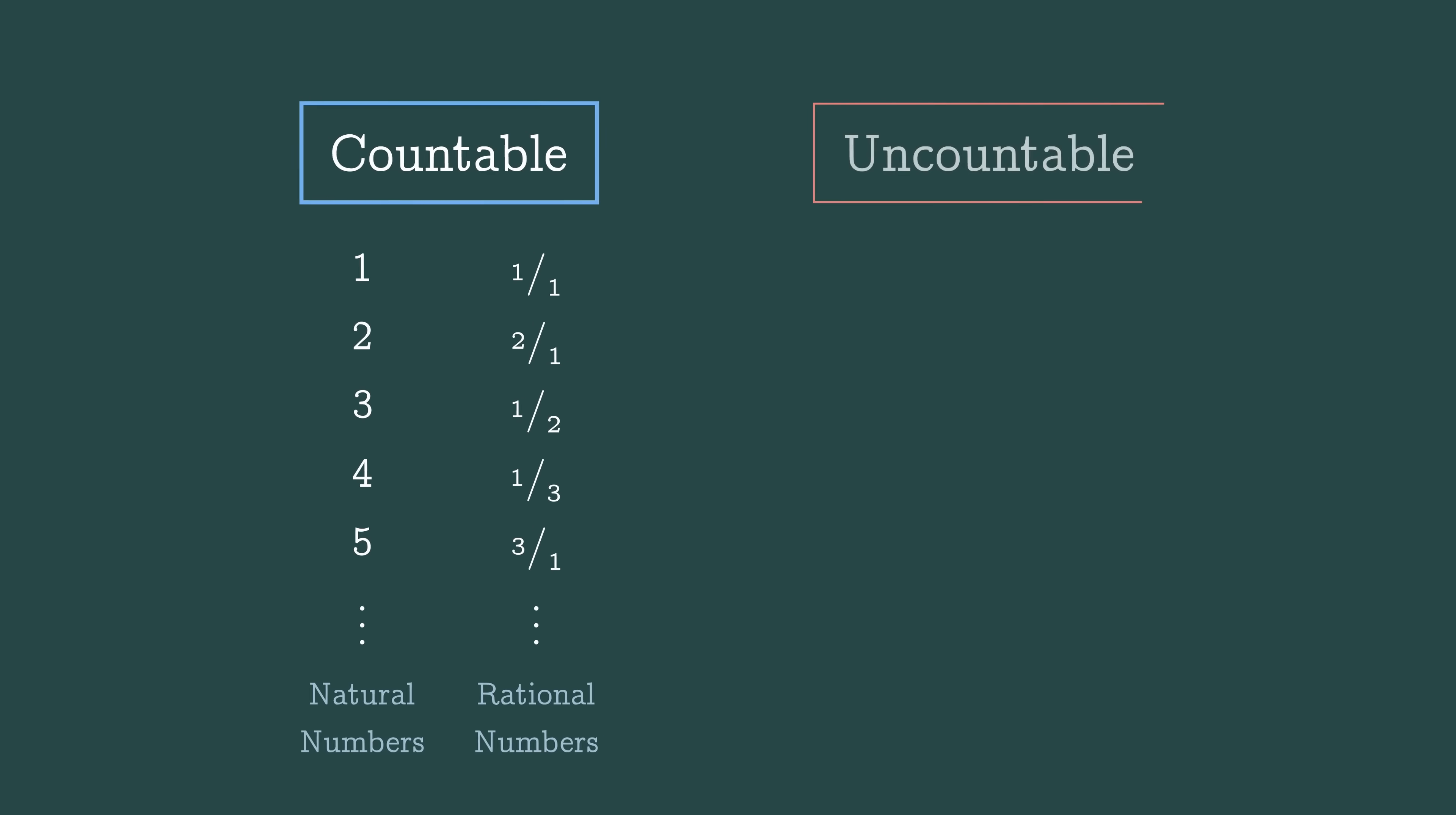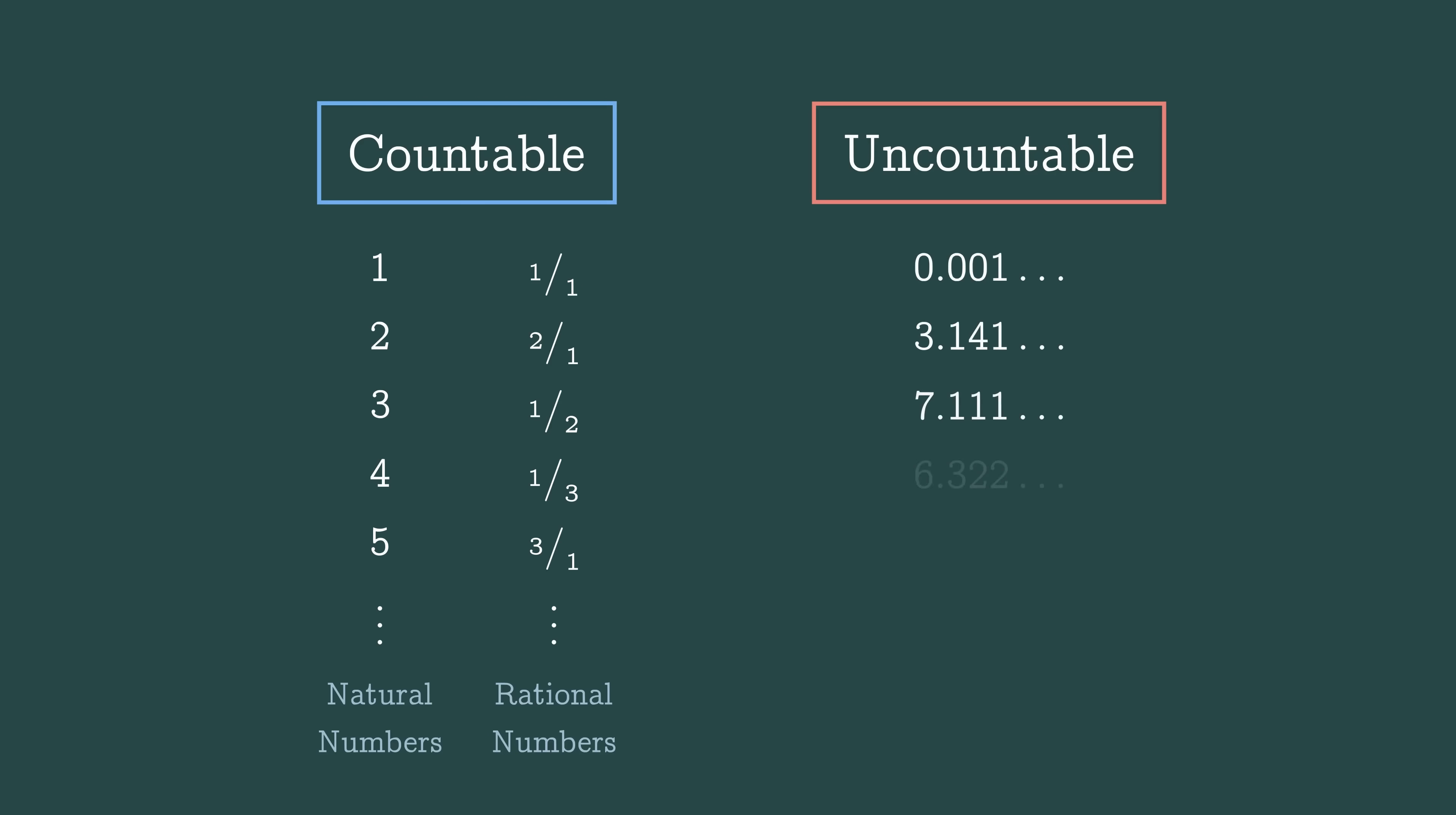There's no way to list the real numbers. If you try to make a list, here's the first one, second one, third one, and so on, you'll always be missing numbers, lots of numbers. So they are a bigger size of infinity. They are uncountably infinite.